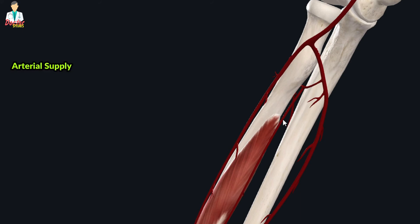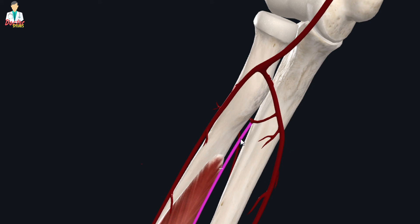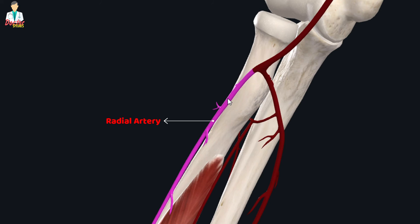The flexor pollicis longus receives its arterial supply from two arteries: the radial artery and the anterior interosseous artery. The anterior interosseous artery arises as an anterior branch of the common interosseous artery, and the common interosseous artery arises from the ulnar artery. The ulnar artery and the radial artery arise as the medial and lateral divisions of the brachial artery, respectively.